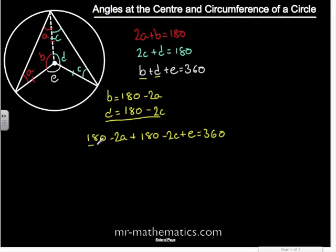We'll collect the like terms of 180 together to make 360 minus 2A minus 2C plus E equals 360. Now we'll take the 360 from both sides and rearrange that to make E equals 2A plus 2C. And we can factorize that, so angle E is 2 lots of A plus C.